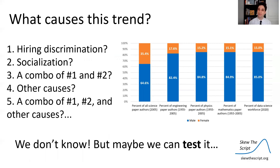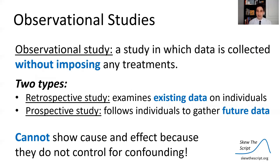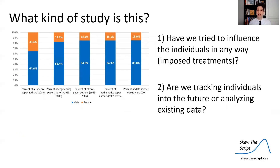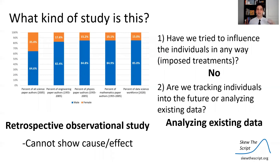Maybe we can test it. Observational studies are studies in which data is collected without imposing any treatments. There are two types: retrospective studies that examine existing data, and prospective ones that follow individuals into the future. Observational studies cannot show cause and effect because they don't control for confounding factors. Looking at existing gender gap data — not imposing treatments, not tracking individuals forward — makes this a retrospective observational study. We cannot show cause and effect through this analysis alone.